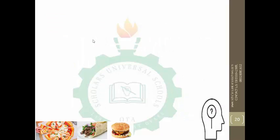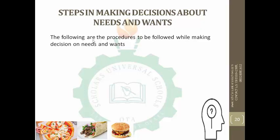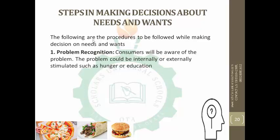Now we are moving to the next part: the steps in making decisions about needs and wants. The first step is problem recognition. Take my friend for instance — he has not eaten for days. The first thing is to recognize the problem he is having, and the problem is hunger. The consumer is aware that his problem is hunger. You have to recognize the problem. The problem could be internally or externally stimulated, just like my friend's hunger — he would recognize that he is hungry.